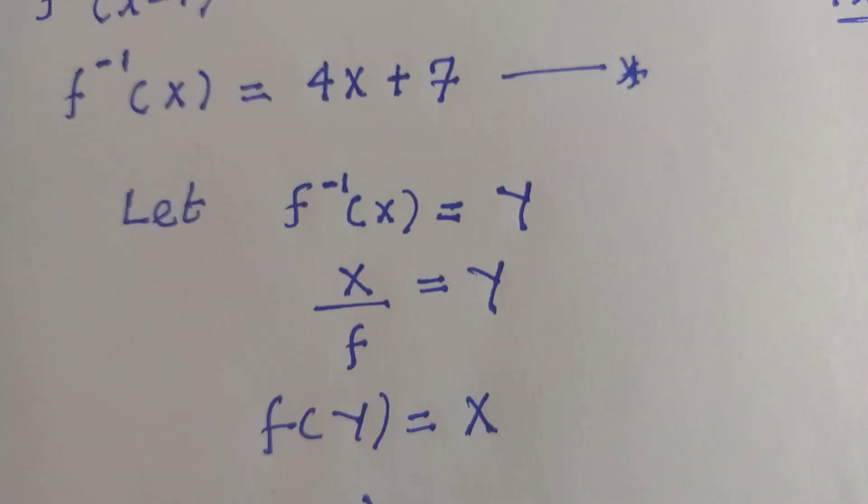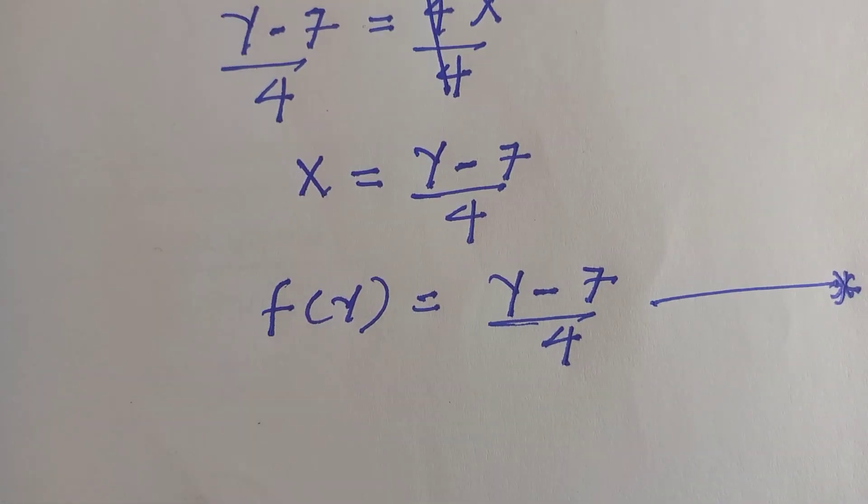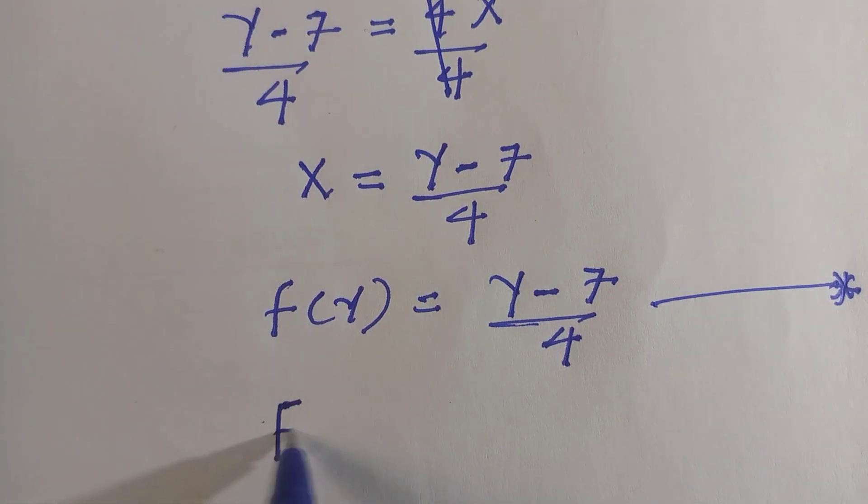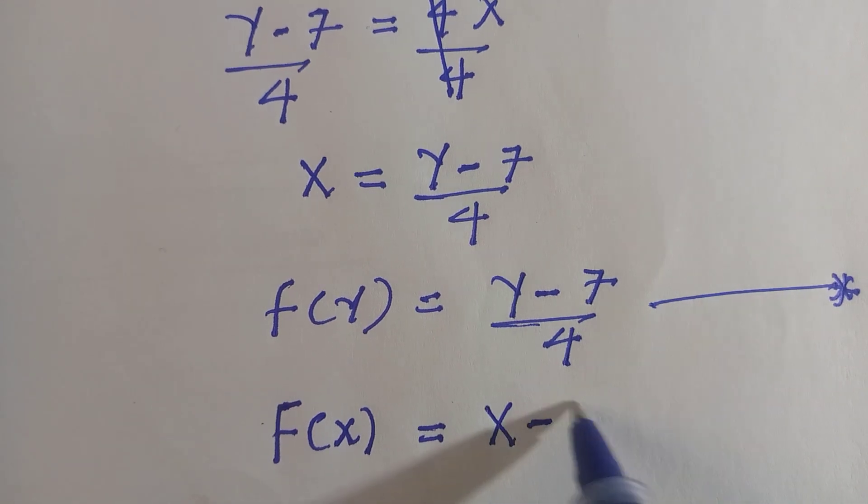Then anywhere we see y, we replace it with x. Then we have f of x equals x minus 7 divided by 4.